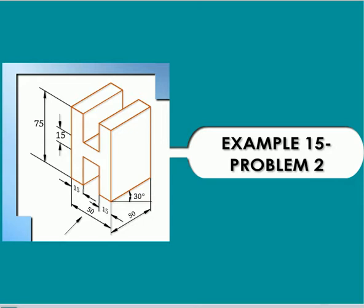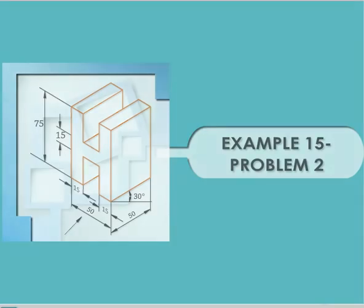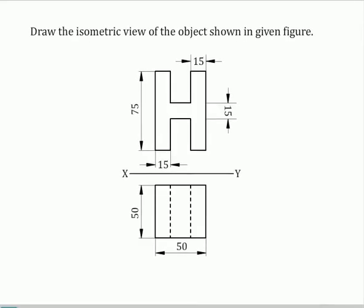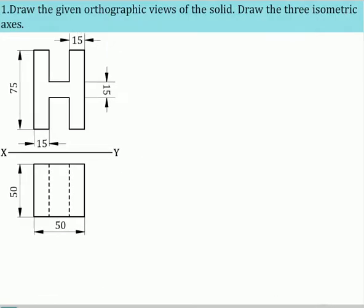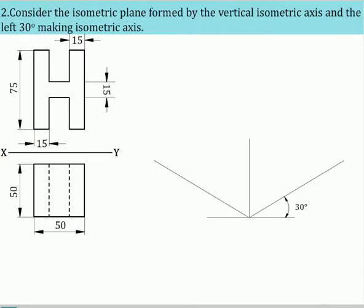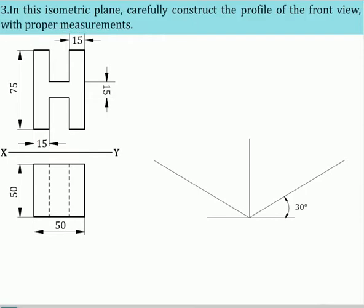Example problem: Draw the given orthographic views of the solid. Draw the three isometric axes. Consider the isometric plane formed by the vertical isometric axis and the left 30-degree making isometric axis. In this isometric plane, carefully construct the profile of the front view with proper measurements.